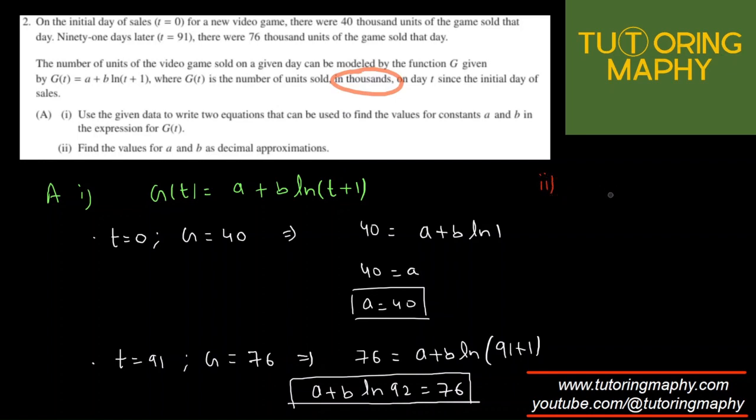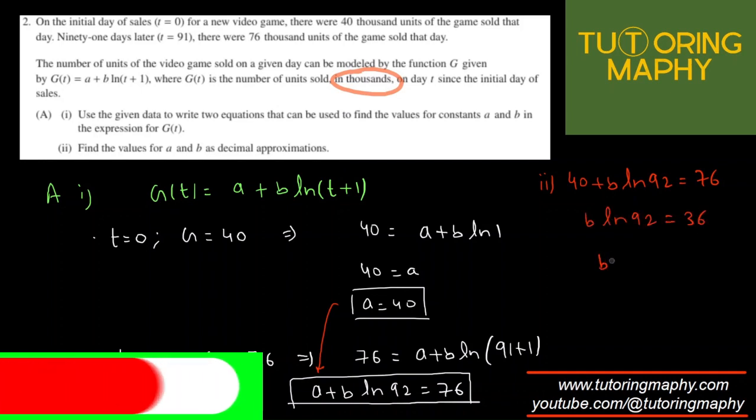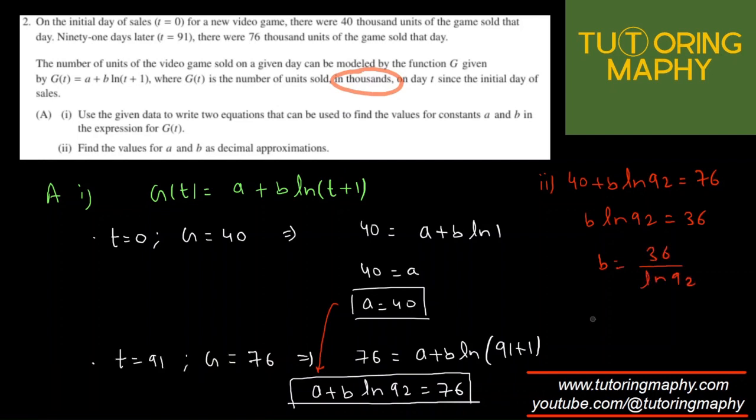And part 2, we're just going to solve the system of equations. We already have the value of A. All we are going to do is sub in this A over here. So that's going to look like 40 plus B ln 92 is equal to 76. So B ln 92 is 36. So B is equal to 36 over ln 92. So the value of B comes out as 7.961 up to three decimal places. So this is the value of B and this is the value of A.